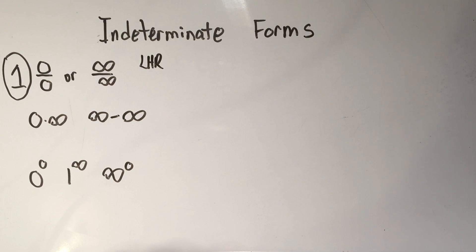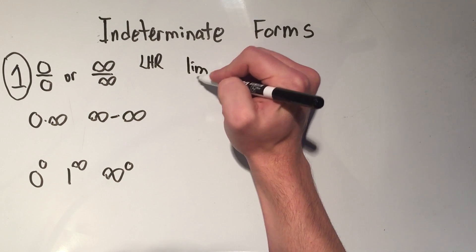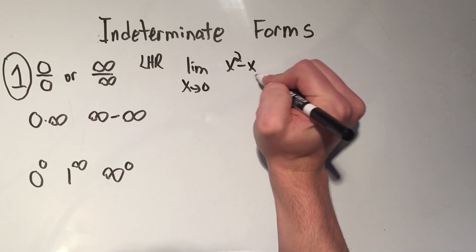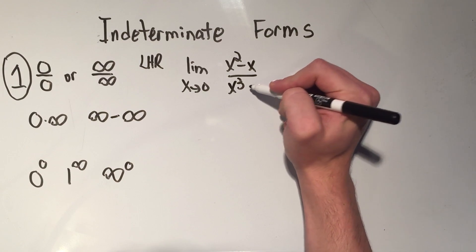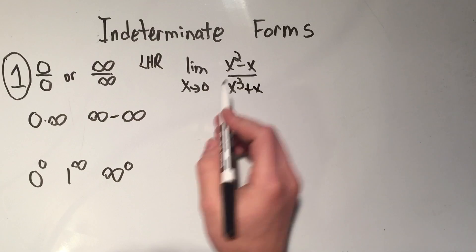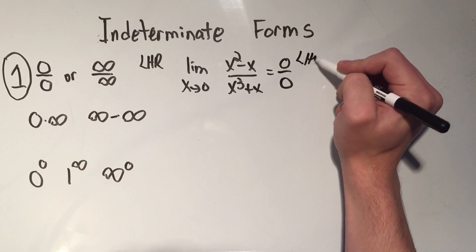Okay, if you haven't seen L'Hôpital's rule, go ahead and check out my video on it. So for example, if you had the limit as x goes to zero of (x² - x) over (x³ + x), that would be a case where you're going to get zero over zero and you can immediately jump to L'Hôpital's rule.